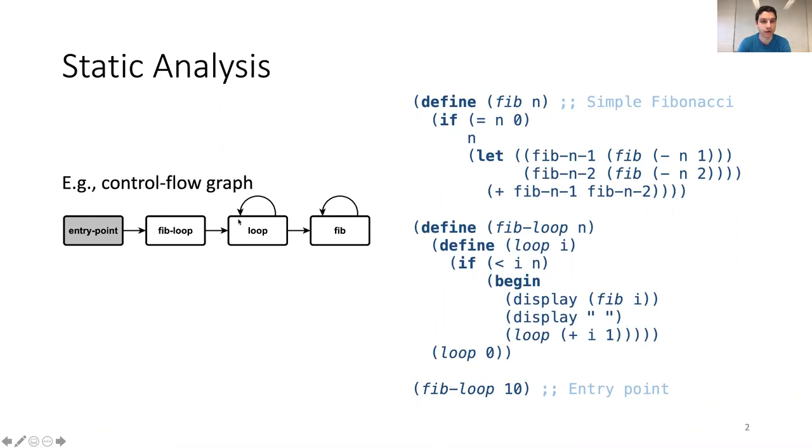An example of such a property is a control flow graph. So suppose we have our little program on the right here where a function computes a Fibonacci, which is called inside the loop. Then the static analysis could, for example, infer this control flow graph on the left. Importantly, such problems are in general undecidable and therefore the static analysis will approximate the actual solution.